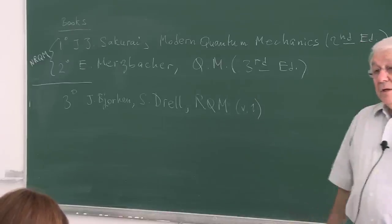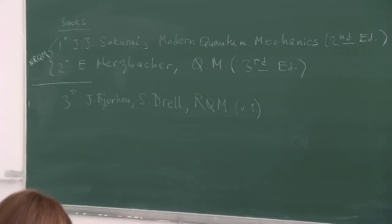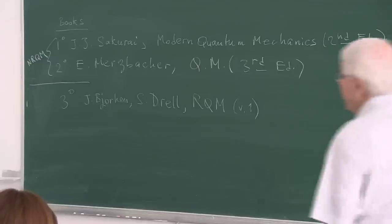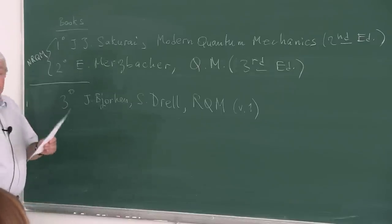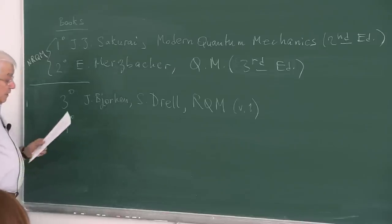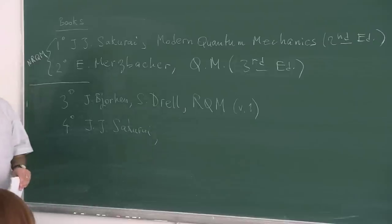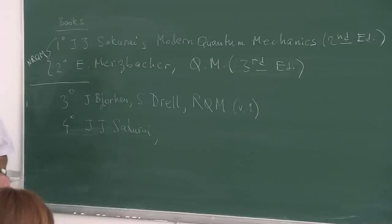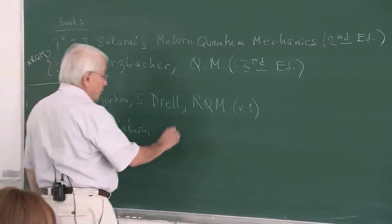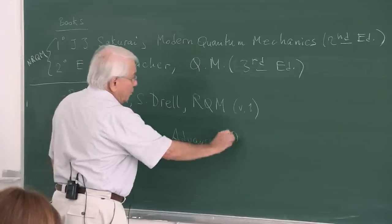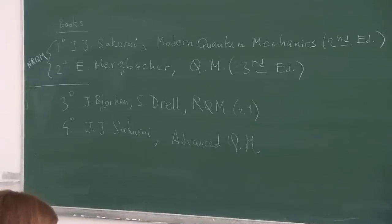Bjorken and Drell is a very old but elegant book. Years ago I learned my relativistic quantum mechanics from it. I still think its style is quite modern, although there are slightly more modern books. I have a special affiliation to it. The fourth is another book by J.J. Sakurai, though it has a slight defect: it uses the ancient metric — the imaginary time metric — so it is a bit outdated in its relativistic metric. Still, it is a very good book, and the title is Advanced Quantum Mechanics.